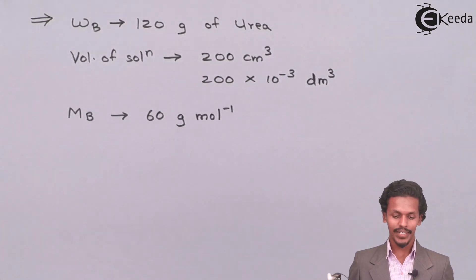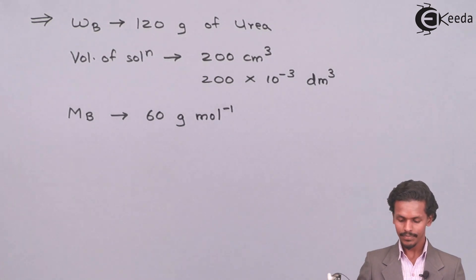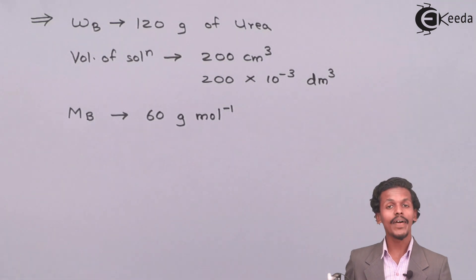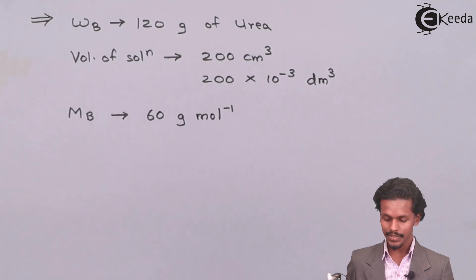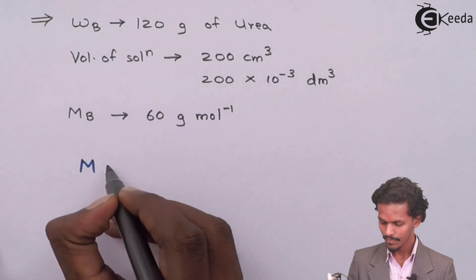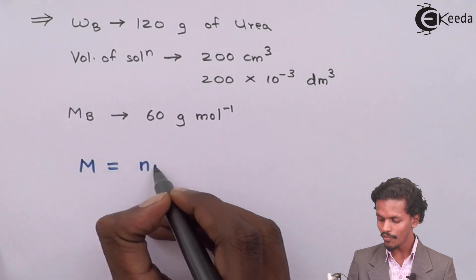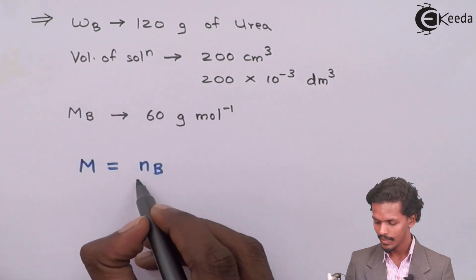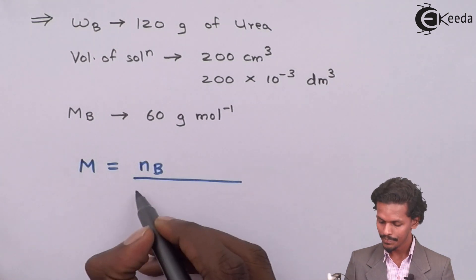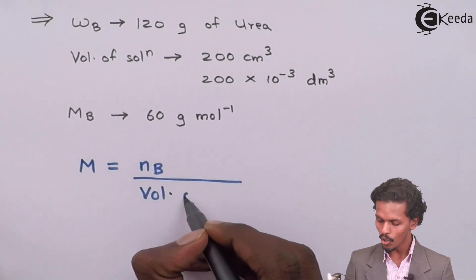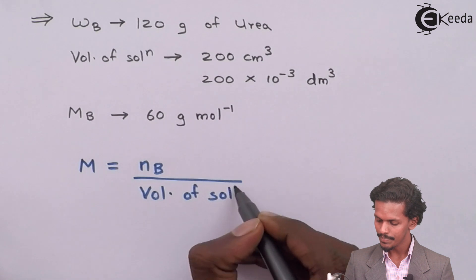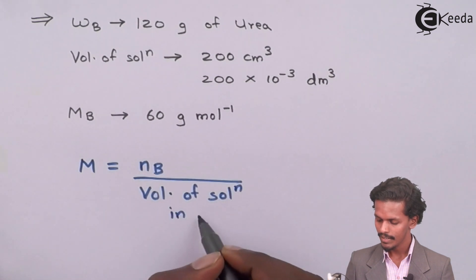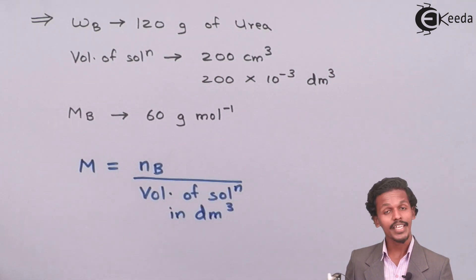So let us write the formula. The formula to find the molarity of a solution is the number of moles of solute dissolved in volume of solution in dm³.